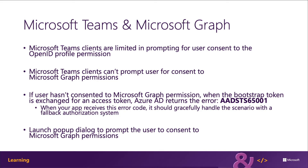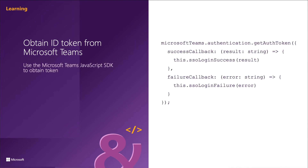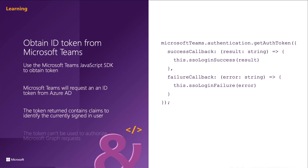The next step for your tab is to obtain the ID token, also referred to as the bootstrap token, from Microsoft Teams. It only contains details used to identify the currently signed-in user and won't contain any permissions that can be used to call Microsoft Graph. To obtain this ID token, you use the Microsoft Teams JavaScript SDK — specifically the authentication object to call getAuthToken. The result object passed to the success callback method contains the ID token returned by Azure AD, which can be used to identify the user within your tab or your own backend system.